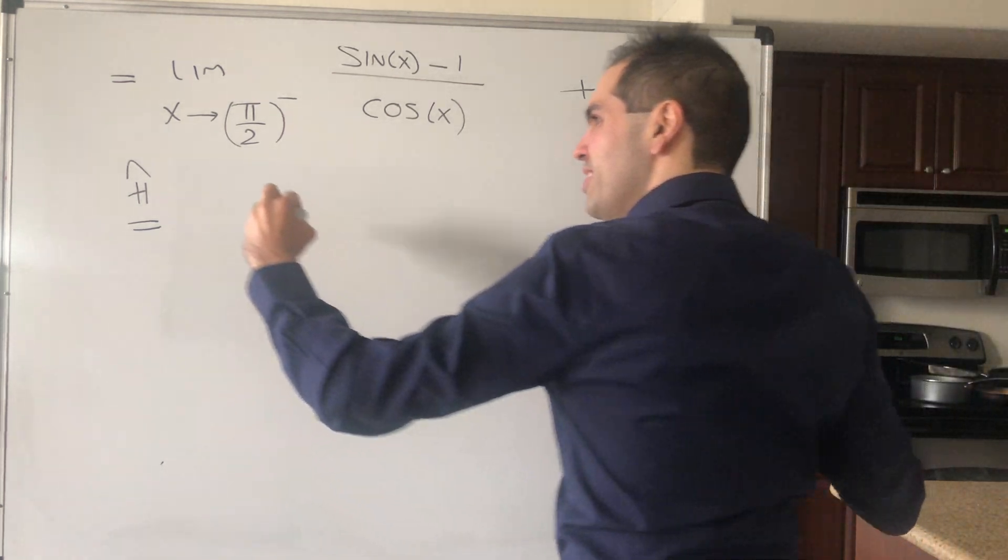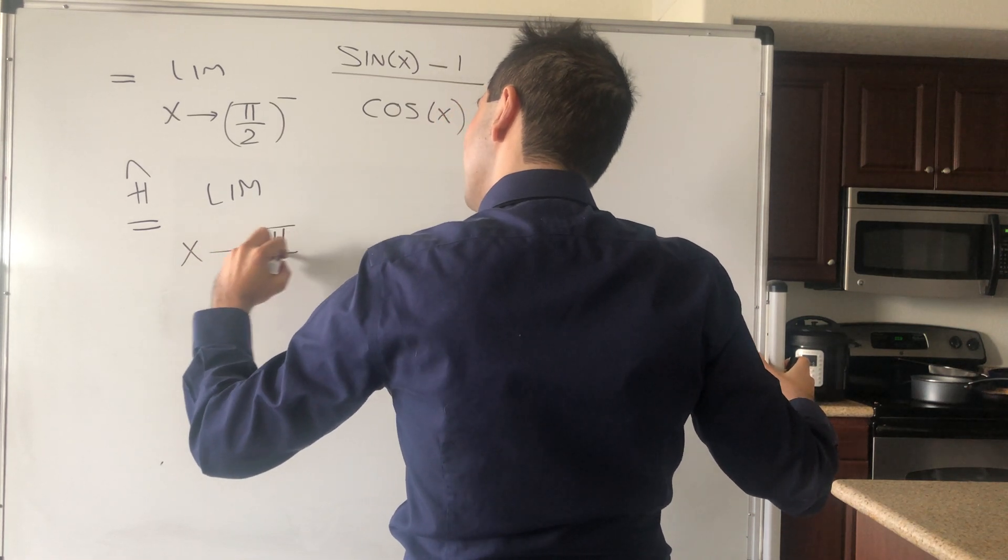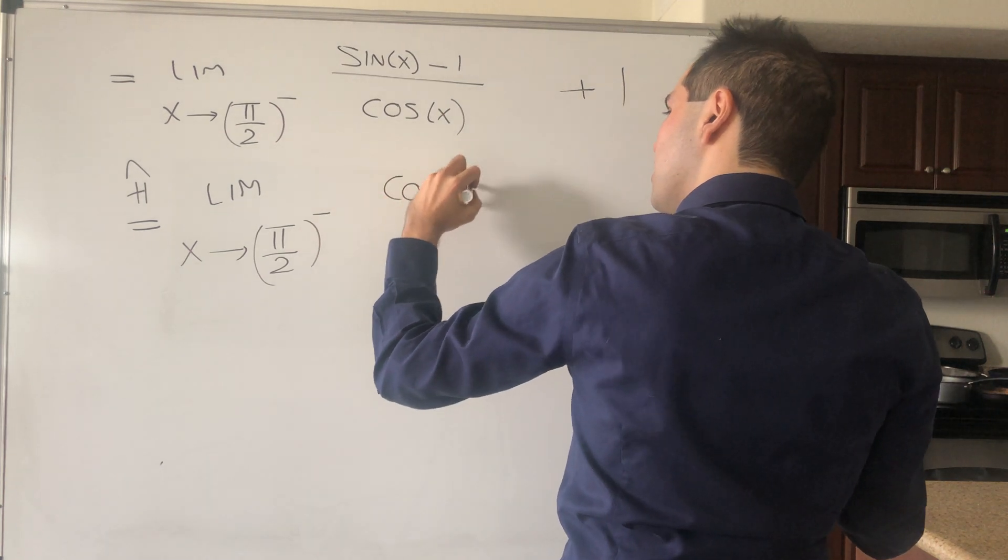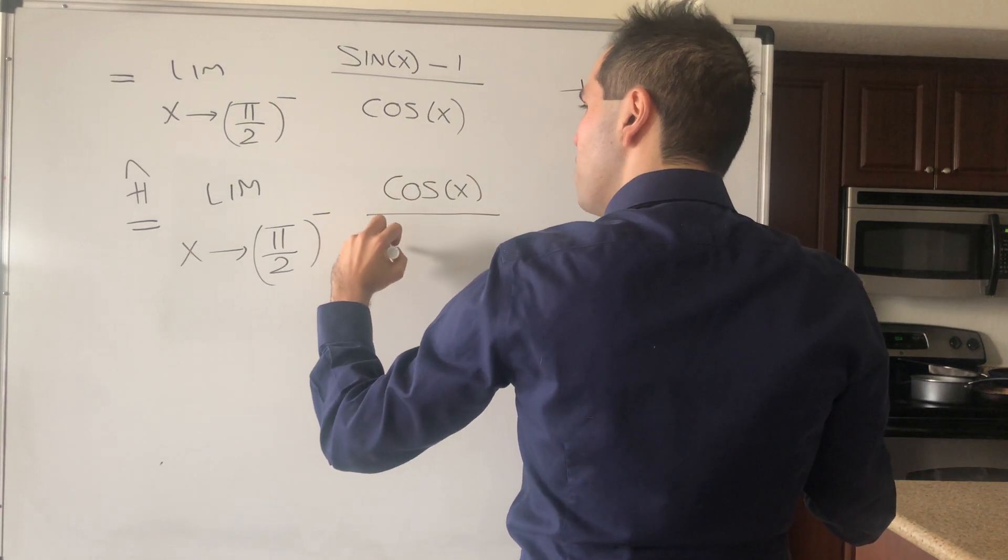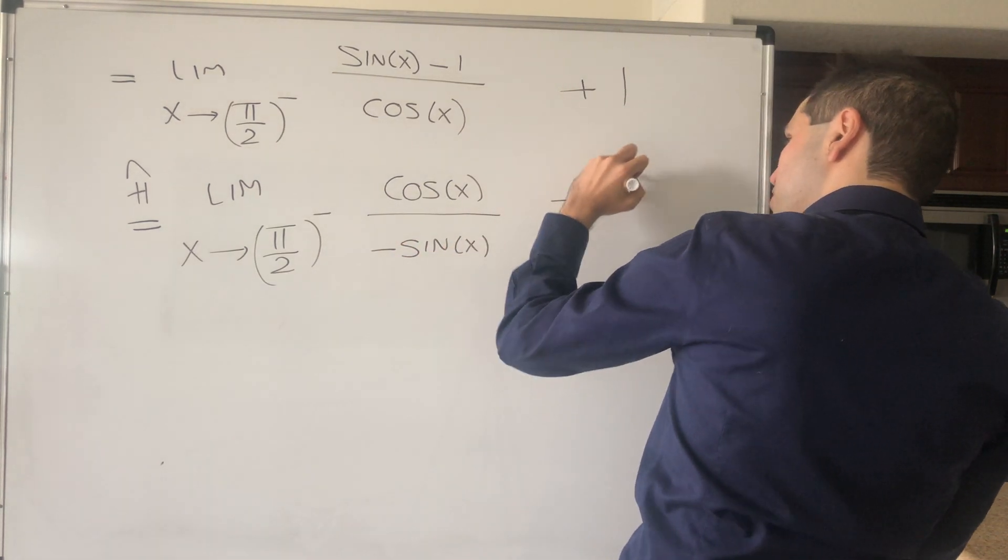And this becomes the limit as x goes to pi over 2 minus of, well, cosine of x over minus sine of x. And again, remember your plus 1.